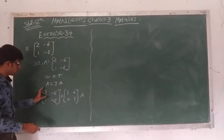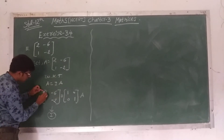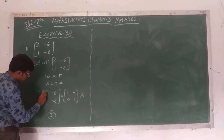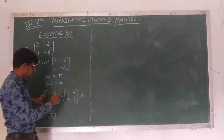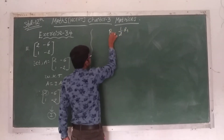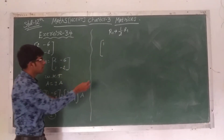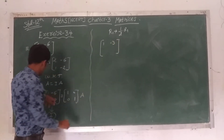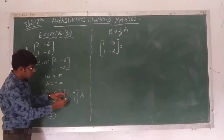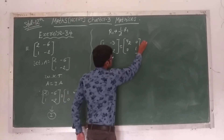Our goal is to write the left-hand side as the identity matrix. We have to make the A(1,1) element equal to 1. The A(1,1) element is 2, so we have to divide by 2 to the first row: (1/2)R1. This gives 2÷2 = 1, -6÷2 = -3. Second row remains [1, -2]. On the right hand side, we get [1/2, 0; 0, 1] times A.